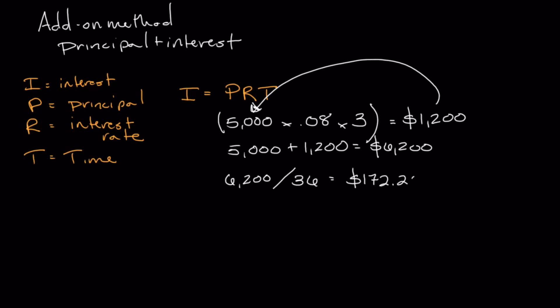That gives us a monthly payment of $172.22. Now, the add-on method is not a very common method of calculating interest because it doesn't really work to the benefit of the borrower. The principal is equally divided over the period of time, so you pay at the same rate but don't receive any benefit for making payments — your interest payments don't drop subsequently.